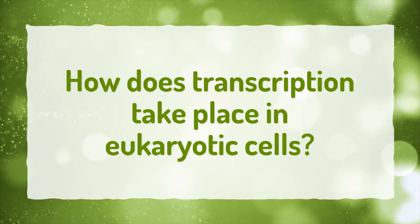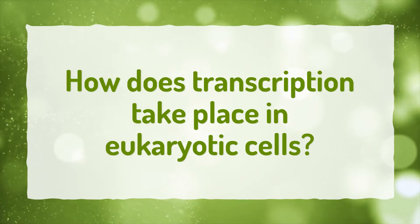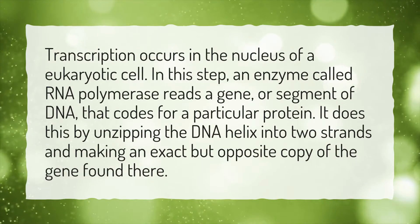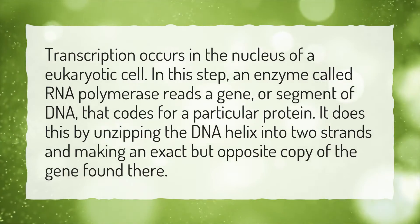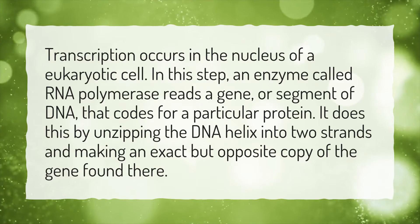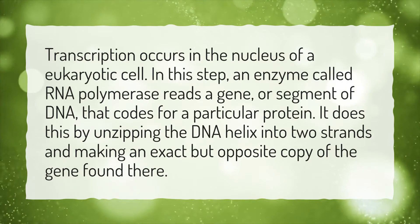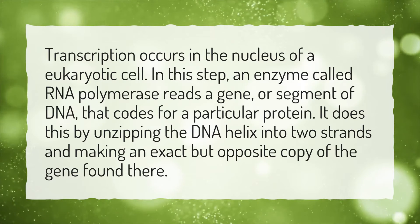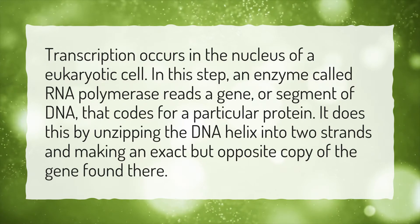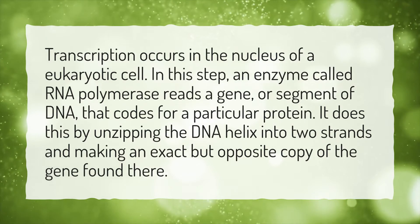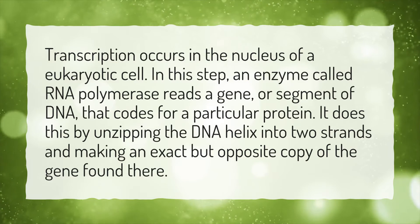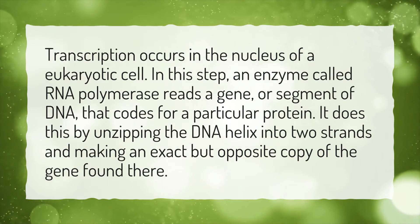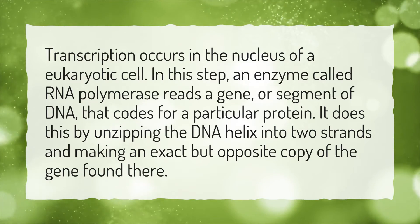How does transcription take place in eukaryotic cells? Transcription occurs in the nucleus of a eukaryotic cell. An enzyme called RNA polymerase reads a gene, or segment of DNA, that codes for a particular protein. It does this by unzipping the DNA helix into two strands and making an exact but opposite copy of the gene found there.